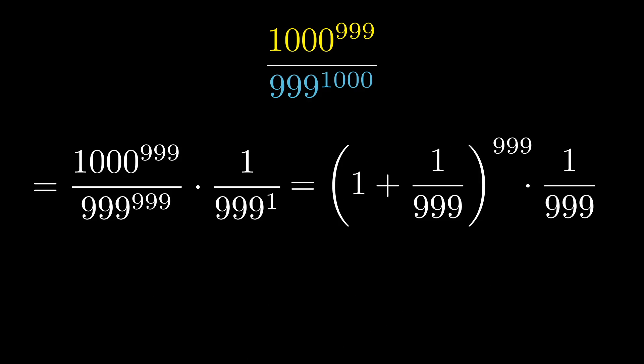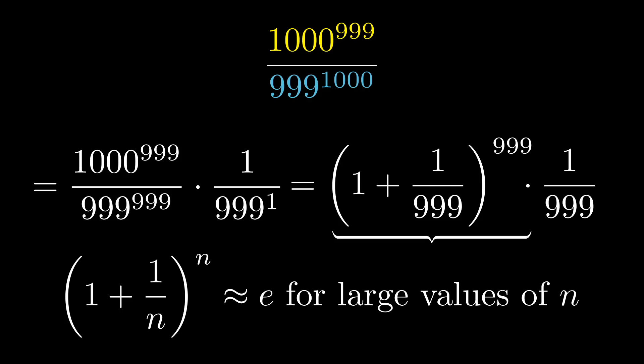And so you might say, well, who cares? In a sense, we're almost making this more complicated, but the point of doing this is a very important pattern recognition. This form, 1 plus 1 over 999 to the 999, is a famous approximation for E, Euler's number.